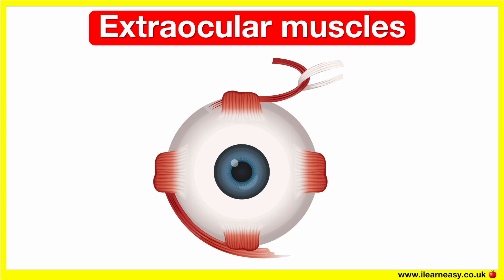Extraocular muscles are the six muscles that control the movement of the eye. They allow your eye to move up, down, side to side, and rotate slightly. These muscles are attached to the sclera — the white part of your eye — and they work together for smooth, coordinated eye movements.